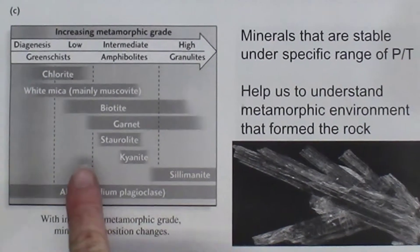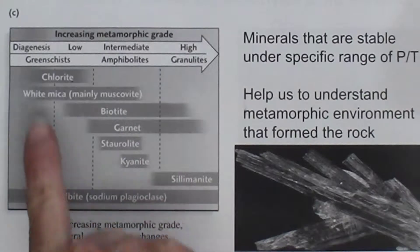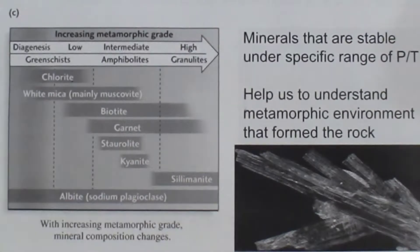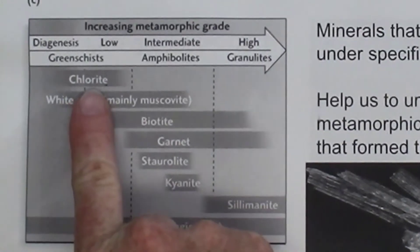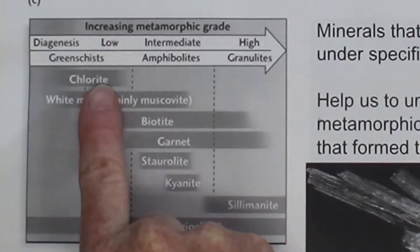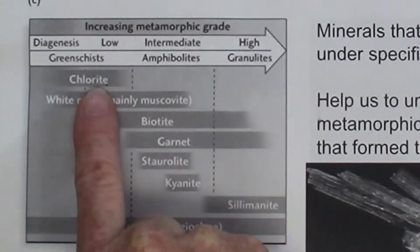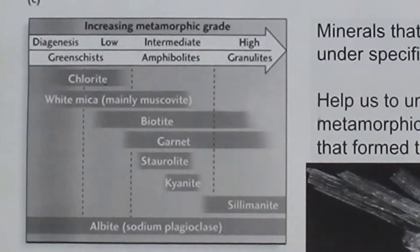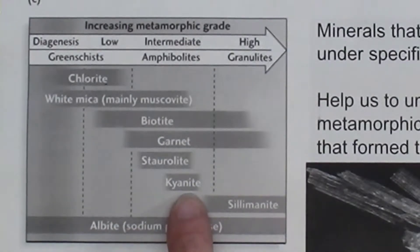This is a diagram showing some common metamorphic minerals that are stable under certain temperature and pressure conditions. For example, chlorite is a green metamorphic mineral that exists only under low temperatures and pressure, so it's a low grade metamorphic mineral. A mineral like kyanite exists under intermediate grade conditions.